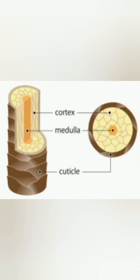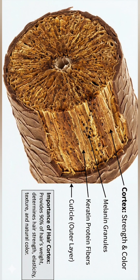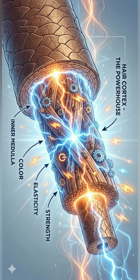Inside the hair cuticle is the cortex — the powerhouse. It holds the majority of your hair's strength, elasticity, and most importantly its pigment, which gives your hair its color. At the very center is the medulla, whose purpose is not fully understood.